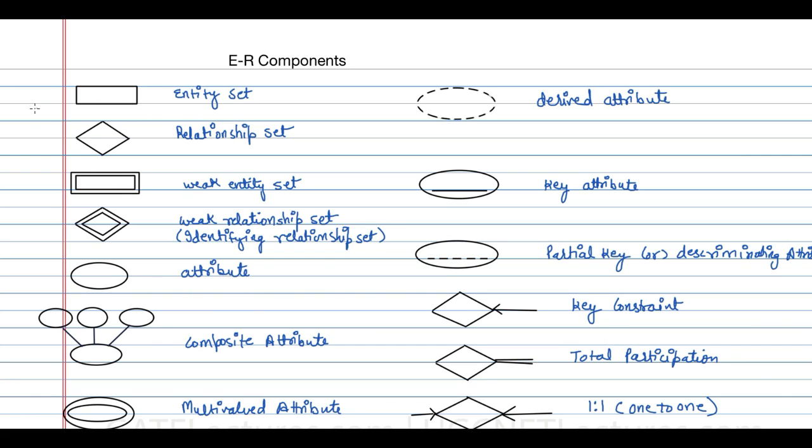So the first is the entity set. An entity set is represented by this rectangle. The second one is the relationship set which is represented by this diamond.